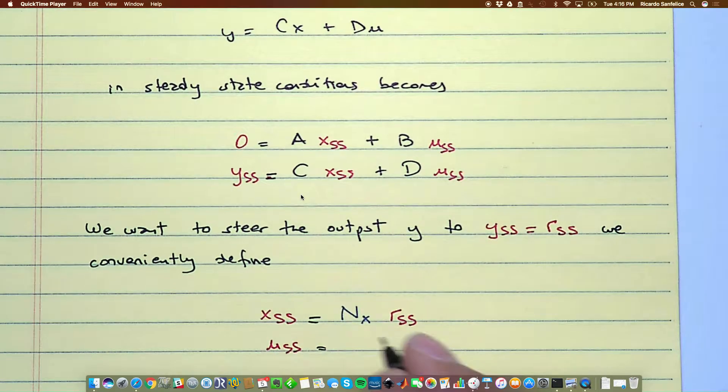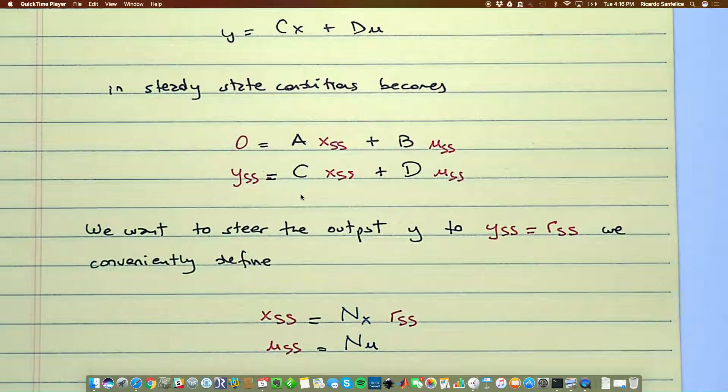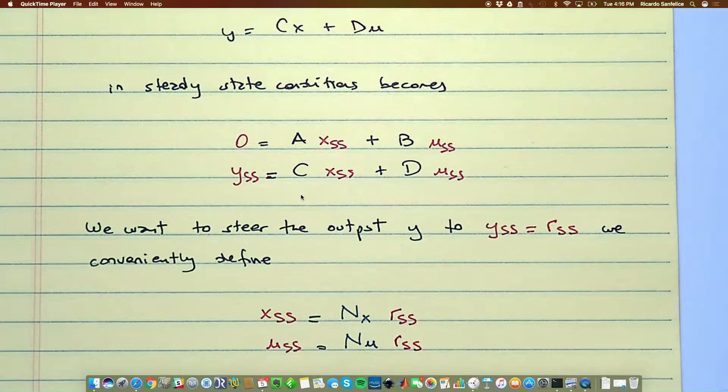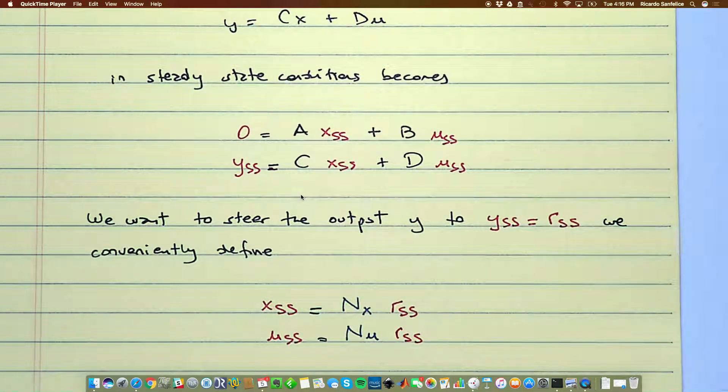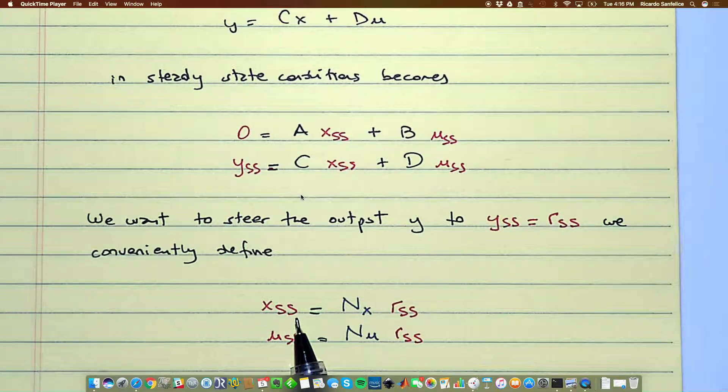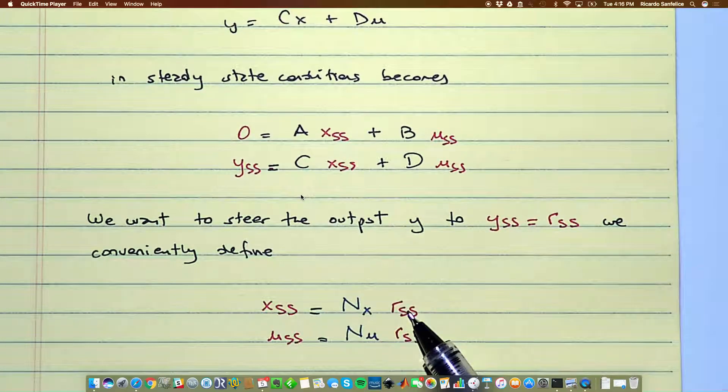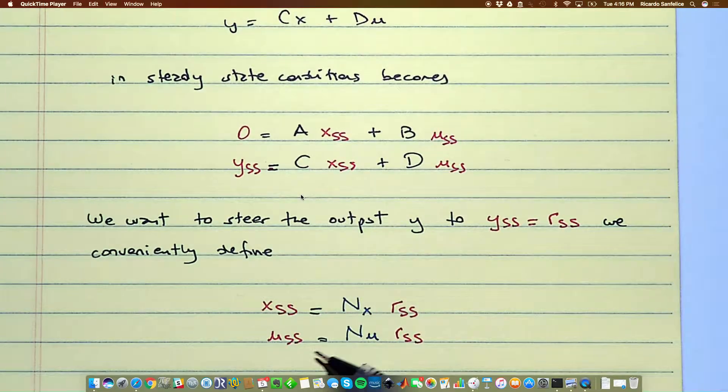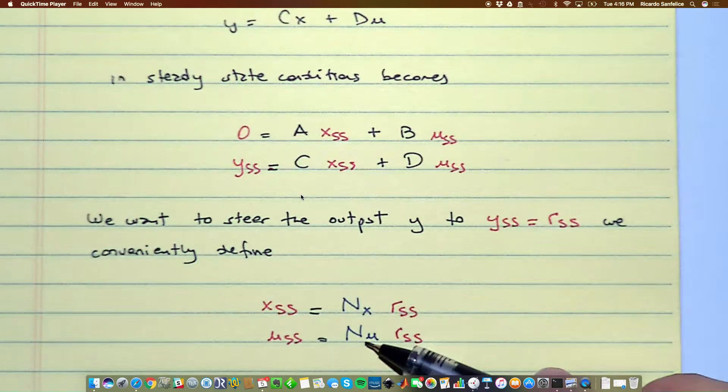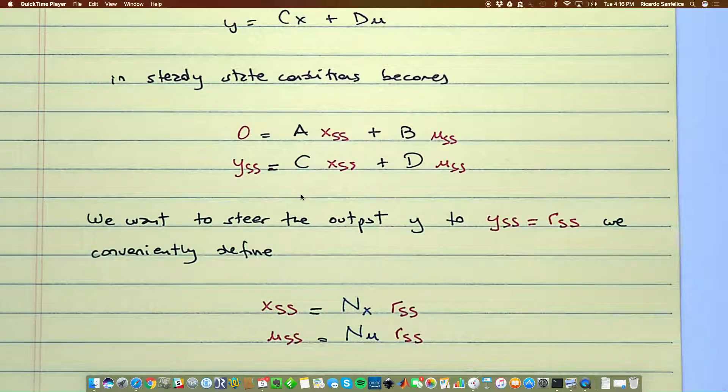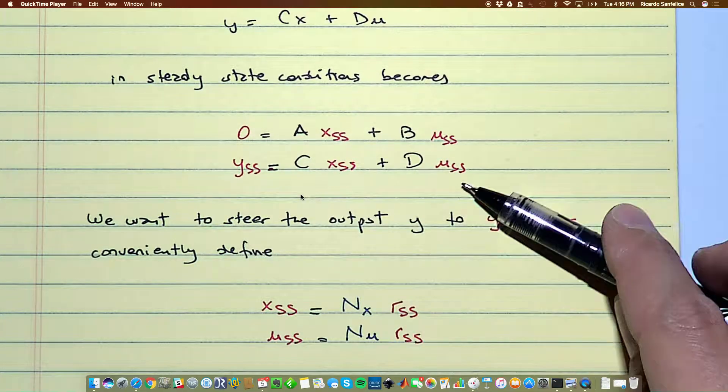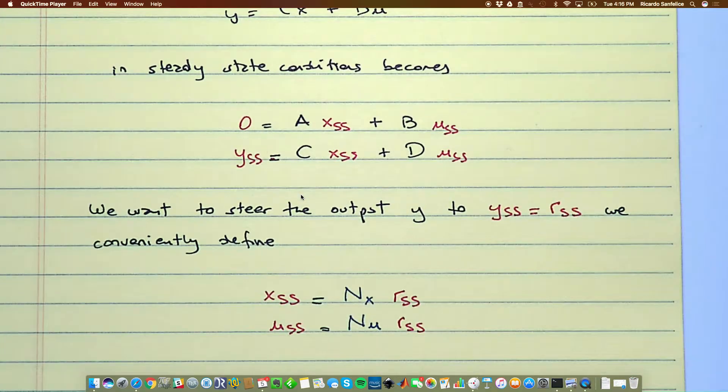Similar to the pendulum analogy now we're going to apply this feedback to the state-space model. So the state-space model x dot equal AX plus BU and Y equal to CX plus DU in steady state conditions becomes well the derivative of X since we are in a steady state is going to be equal to zero. So we're going to have a zero there equal A times X in a steady state plus by the choice of this input up here when X is equal to X_SS this goes to zero so the input becomes U_SS. So this will be B times U_SS and then the output we could also define it as a steady state value Y_SS equal to CX_SS plus DU_SS.